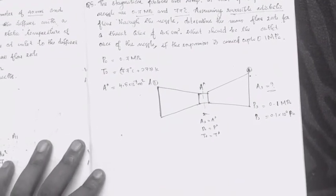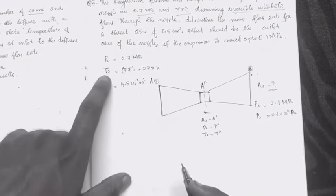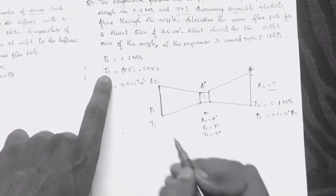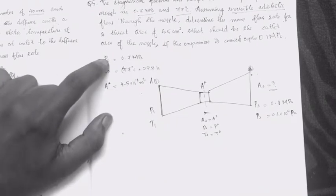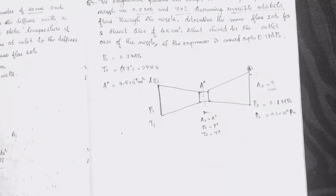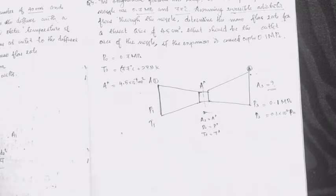First of all, we have to find P1 and D1 at the inlet. This is the first step in solving the problem — determining the inlet conditions before proceeding to the exit calculations.